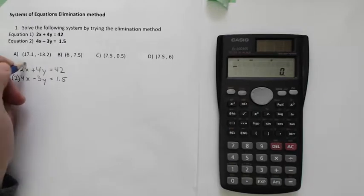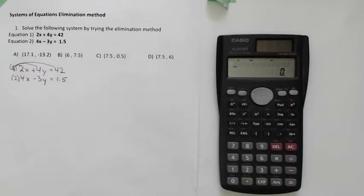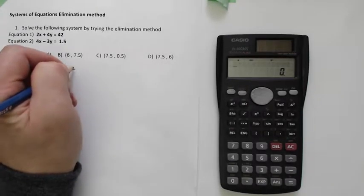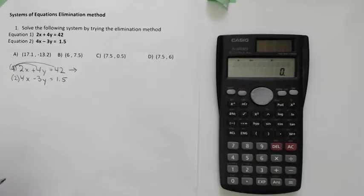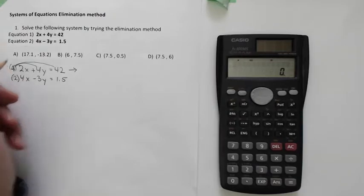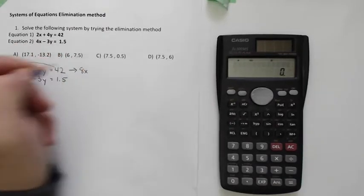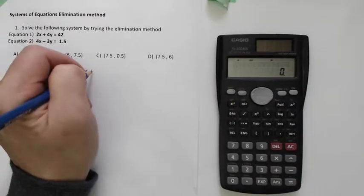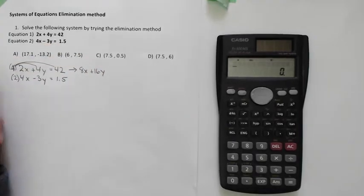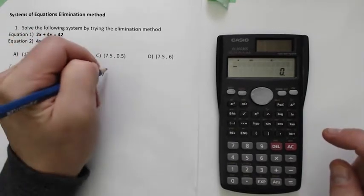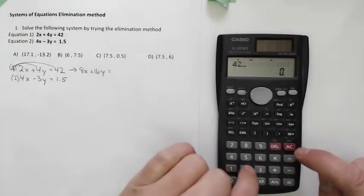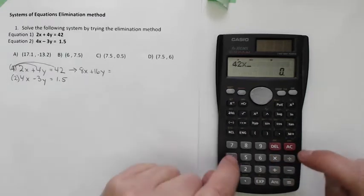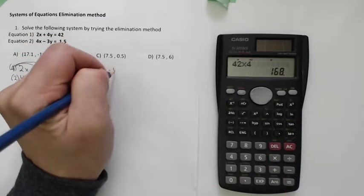And when I do that, I've got to remember I have to distribute all the way across. So that equation will become a slightly different equation. It's going to become 8x plus 16y is equal to 42 times 4. And that gives you 168.